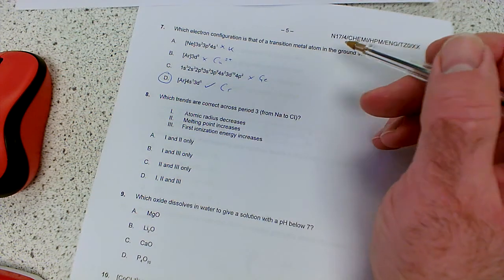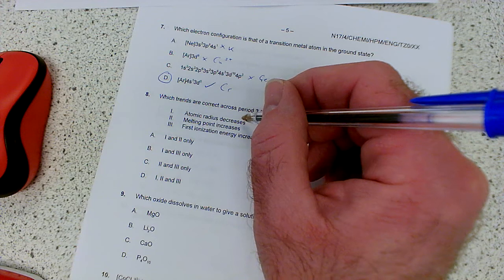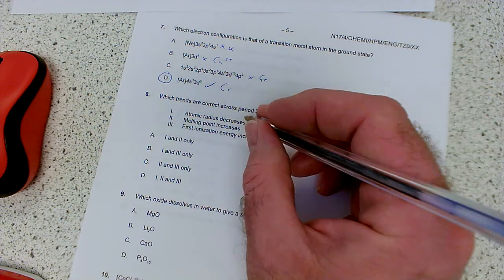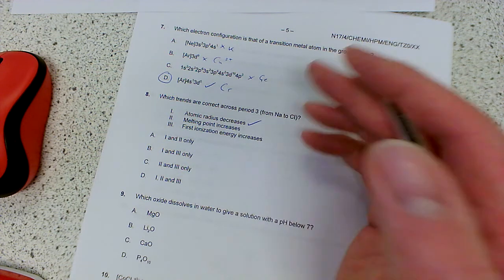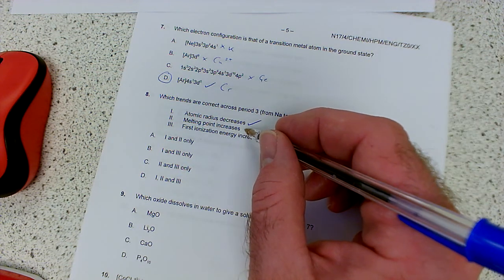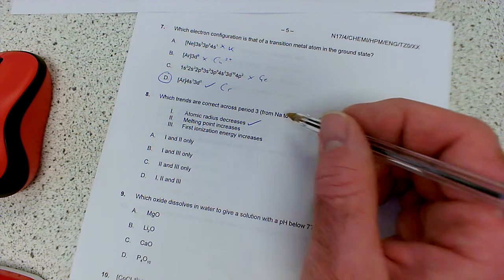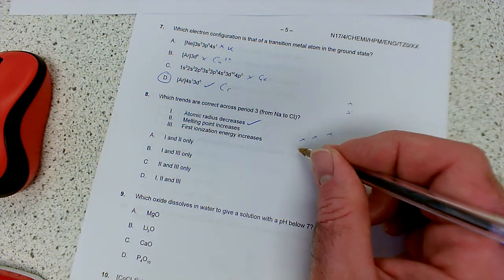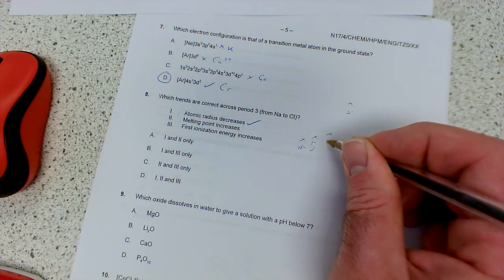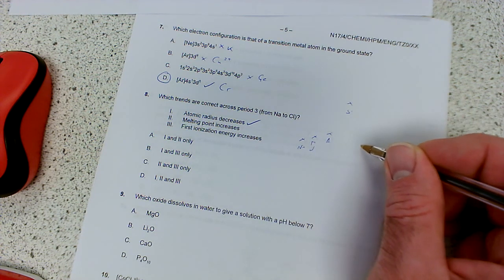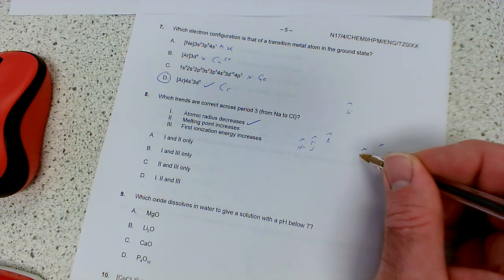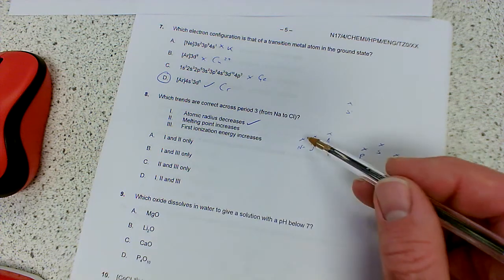Which trends are correct across period 3, from sodium to chloride? Atomic radius decreases, yes, as nuclear charge increases, the electrons get pulled in more tightly, so atomic radius decreases, because we don't start a new shell. Melting point increases, well, it does at the start, it increases from sodium to magnesium to aluminium, if you remember, and then it jumps up massively for silicon. But then it comes crashing back down again for, is it, phosphorus, up a little bit again for sulfur, down for chlorine, down for argon. So we certainly can't say the melting point increases, because it does for a bit, but then it comes crashing back down again.